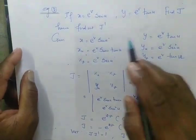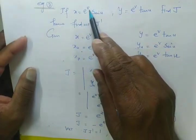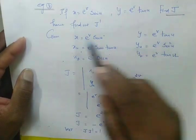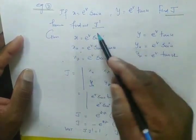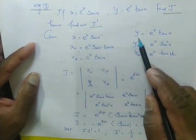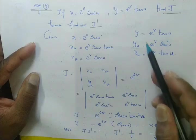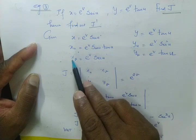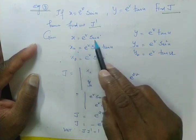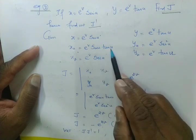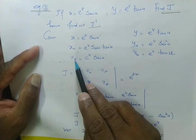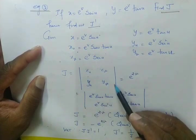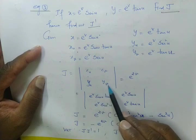Example 3. x is equal to e^v times sec u, y is equal to e^v times tan u. Find J. x with respect to u: e^v times sec u times tan u. x with respect to v: e^v times sec u. Differential of sec u is sec u tan u; differential of e^v is e^v, which remains the same.